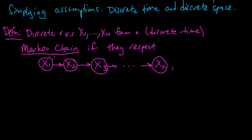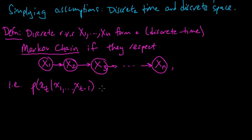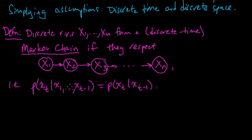Another way to say this is that the probability of X_T given all previous values X1 up to X_{T-1} equals the probability of X_T given X_{T-1}. In other words, X_T is conditionally independent of X1 through X_{T-2} given X_{T-1}. These two formulations are equivalent.